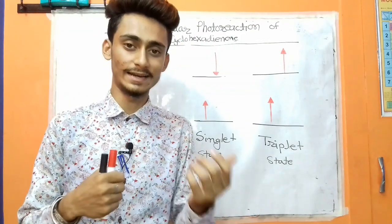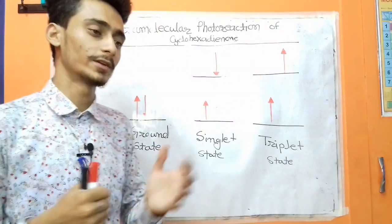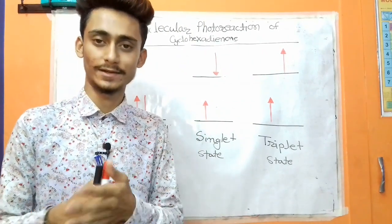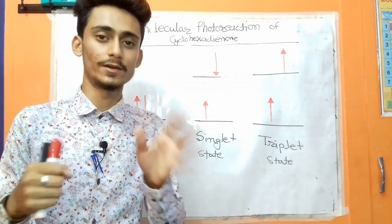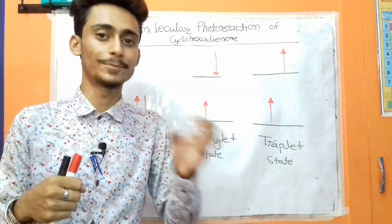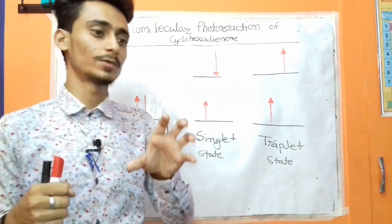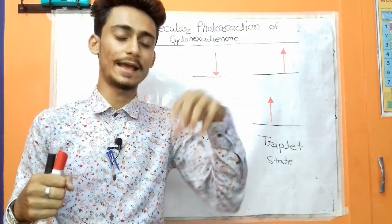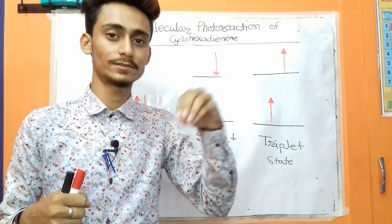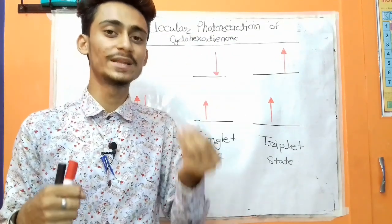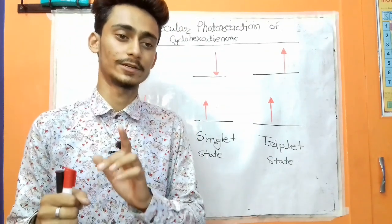Any organic molecule has an even number of electrons, and these electrons remain as pairs. When this molecule absorbs light as energy, these electrons get excited from the ground state to the excited state. This excitation is completed without spin conversion, and this state is called the singlet state.